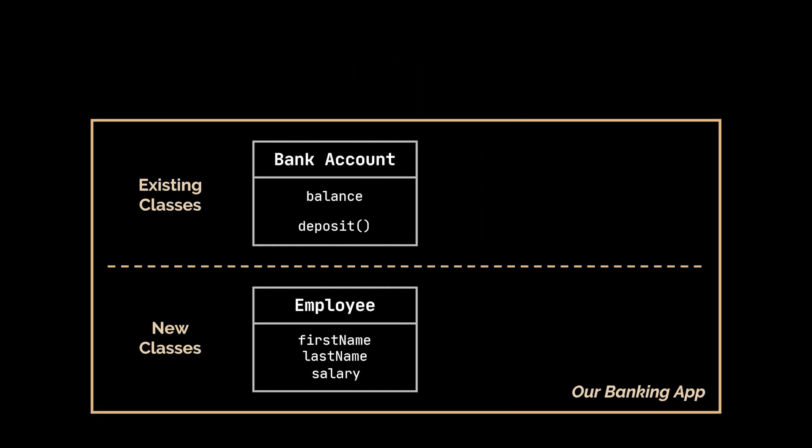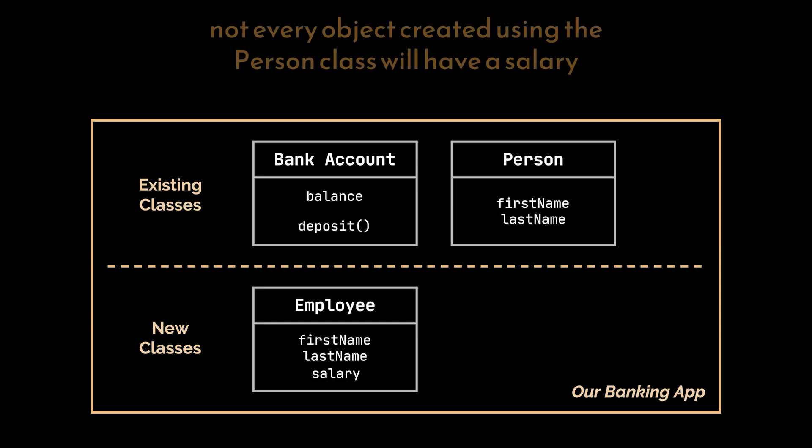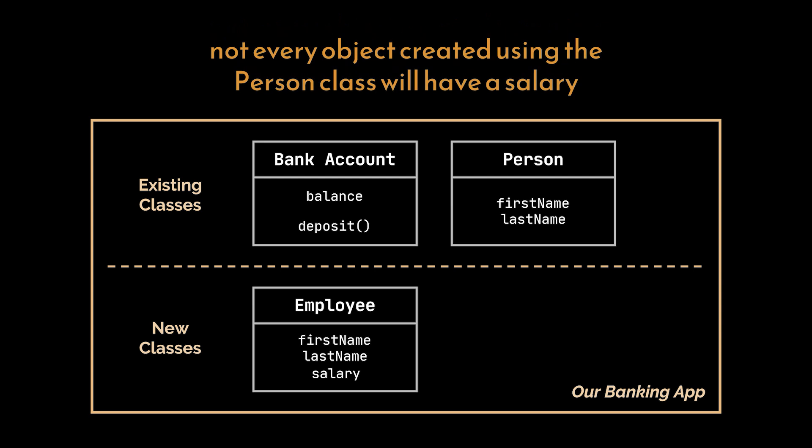Okay, now as a next step for this banking application we would like to create an employee class to use it later on and generate objects representing each employee in the bank. But while creating the employee class, we realized it contains the same attributes as the person class, a class that already exists in our application and is being used by other parts of it.